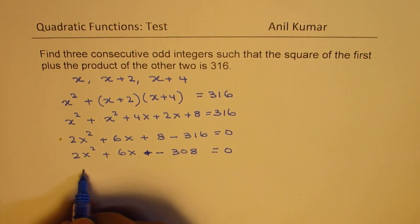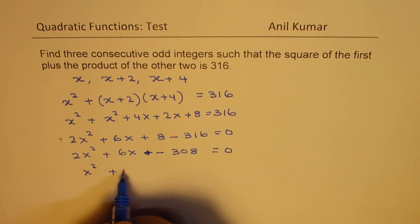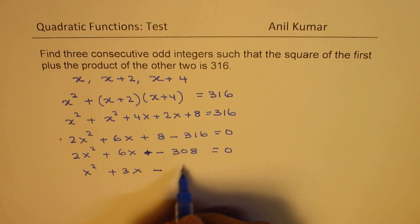We can divide by 2. So we get x squared plus 3x minus—dividing by 2 we get 154—equals to 0.